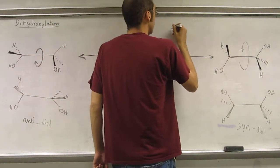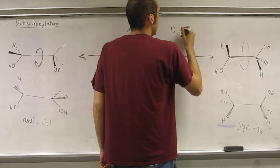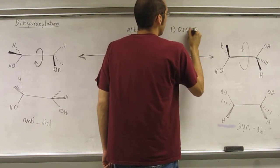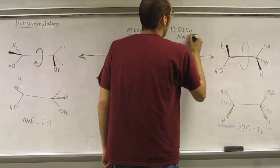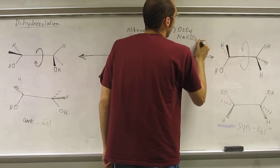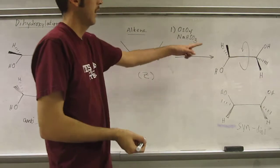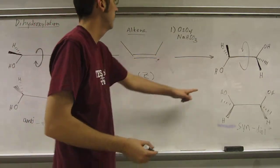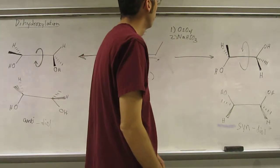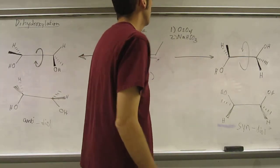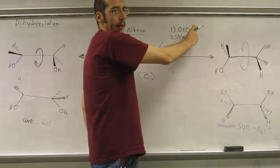To get the syn-diol, the easiest way is to use osmium tetroxide and sodium bisulfite, and that will go directly to the syn-diol. Remember you make the osmate intermediate, and the sodium bisulfite reduces the osmate intermediate.